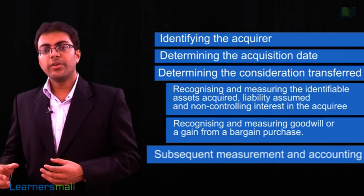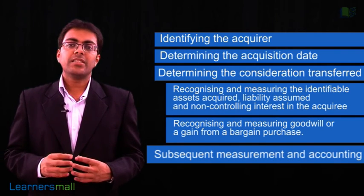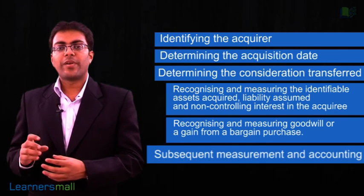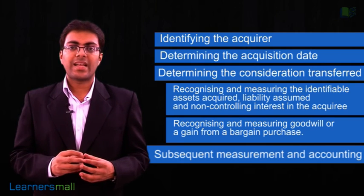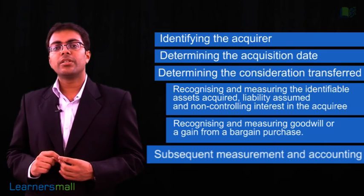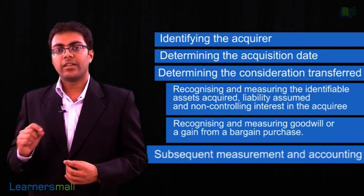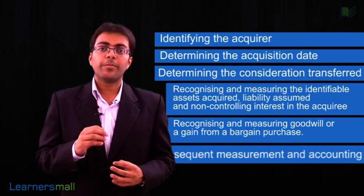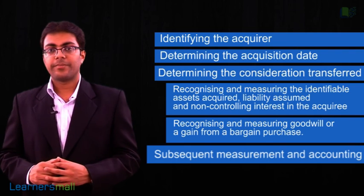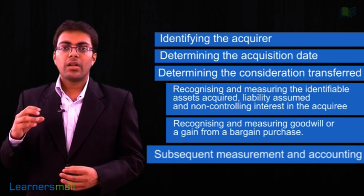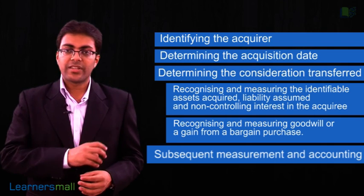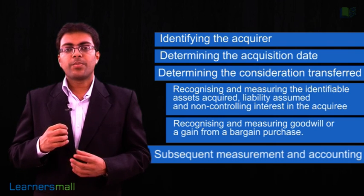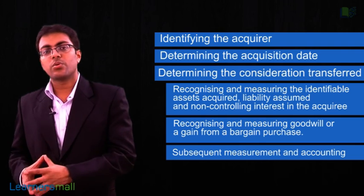The next step under the acquisition method is subsequent measurement. For subsequent measurement of assets and liabilities, one would have to follow the guidance provided in the other IND-AS standards. However, IND-AS 103 provides specific guidance for reacquired rights and certain liabilities as at the date of acquisition. An important point is that the goodwill amount cannot be changed later unless specific additional information is provided during the measurement period, and this measurement period cannot exceed one year. The standard also provides guidance for business combinations achieved in stages, and for acquisitions under court-approved schemes, which are not covered in this video.